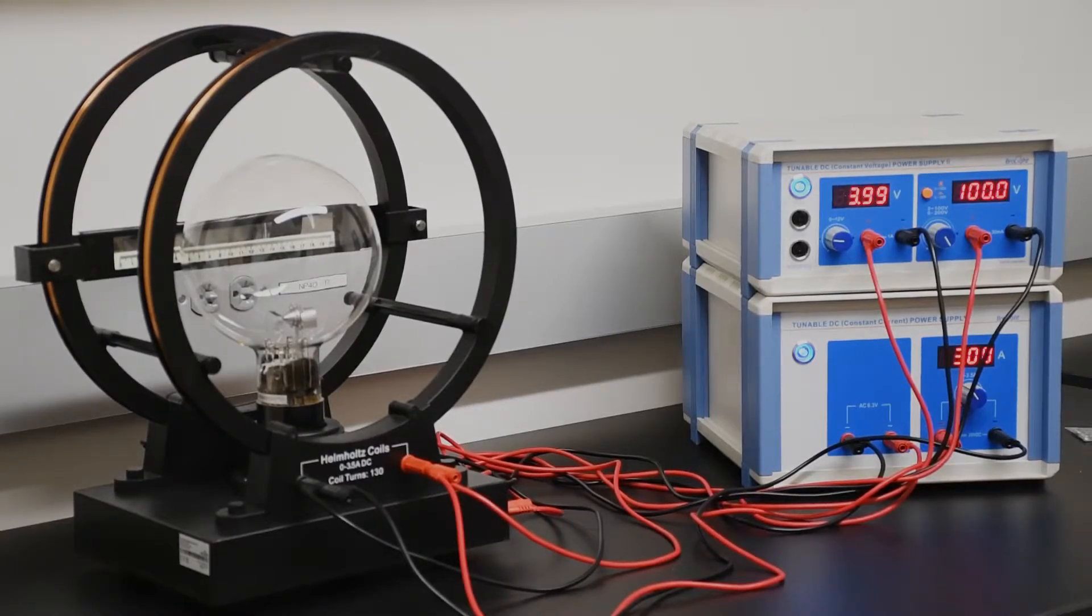The voltage that accelerates the electrons is the 100 volts that you see displayed on the upper right of the power supply on your right. Below that, the current of 3 amps is the current that is delivered to the Helmholtz coils and that determines the magnetic field. The other display you see there, the 4 volts, is a steering voltage that controls somewhat the direction of the beam inside the tube and we won't need to change that at all.